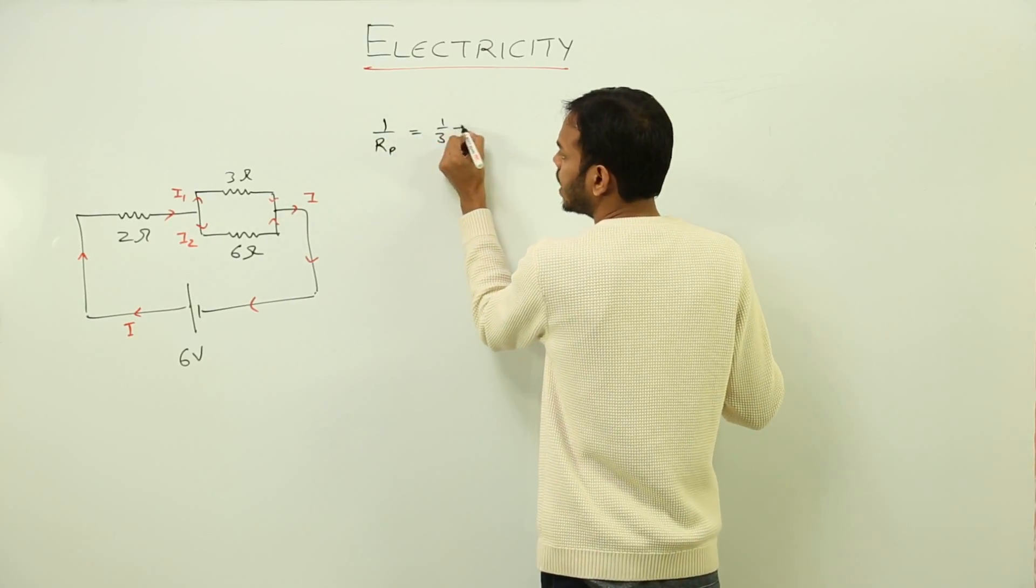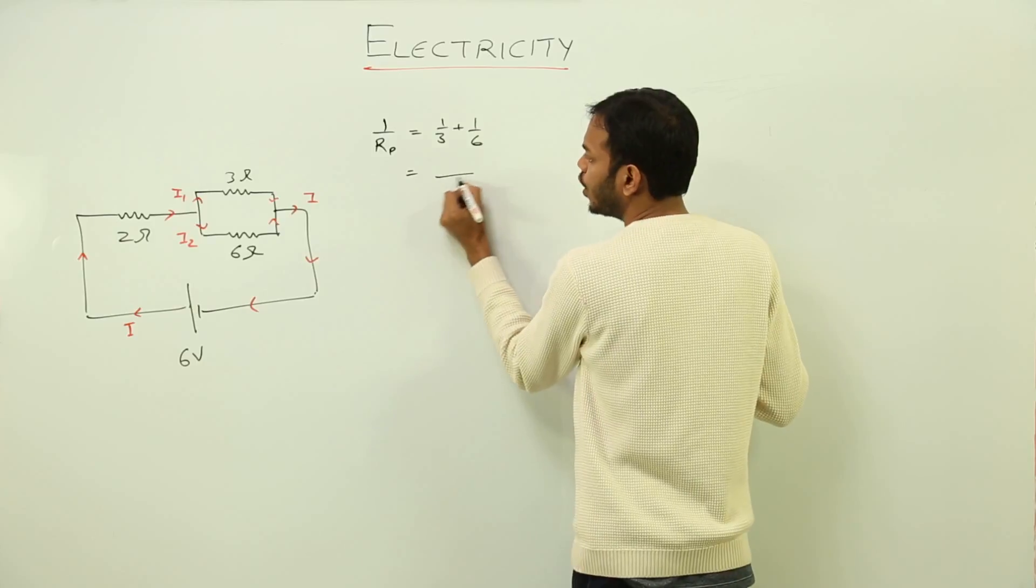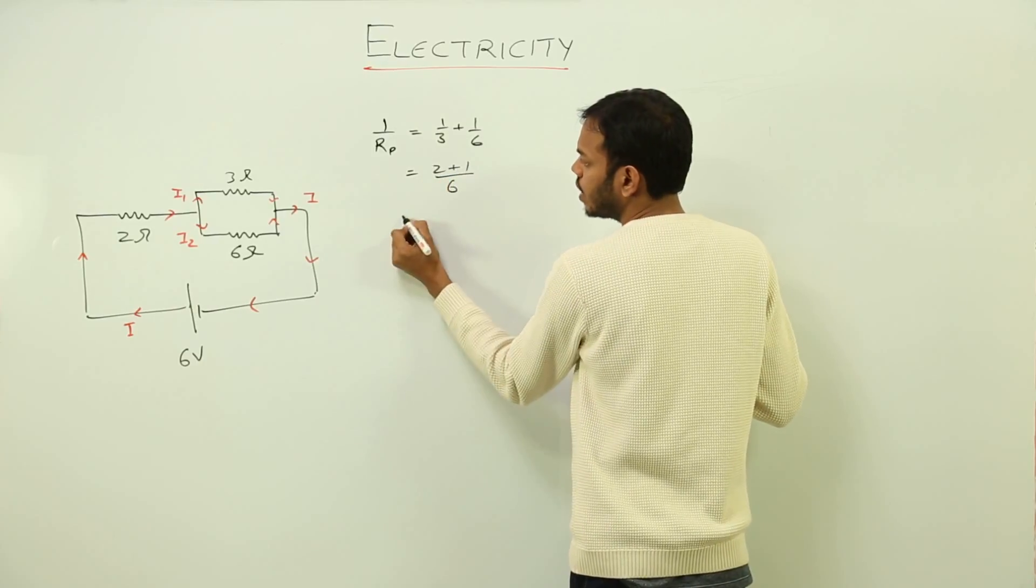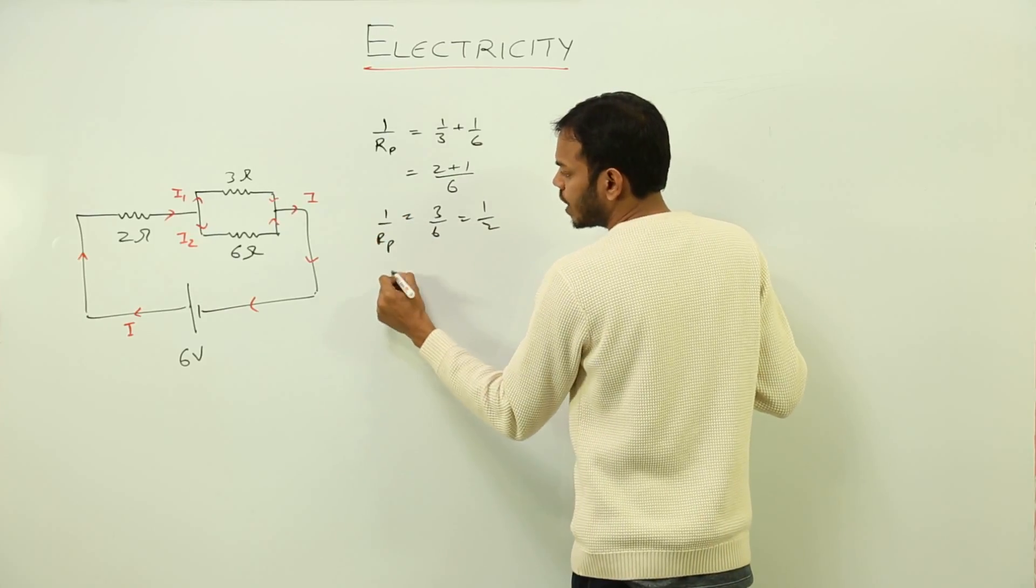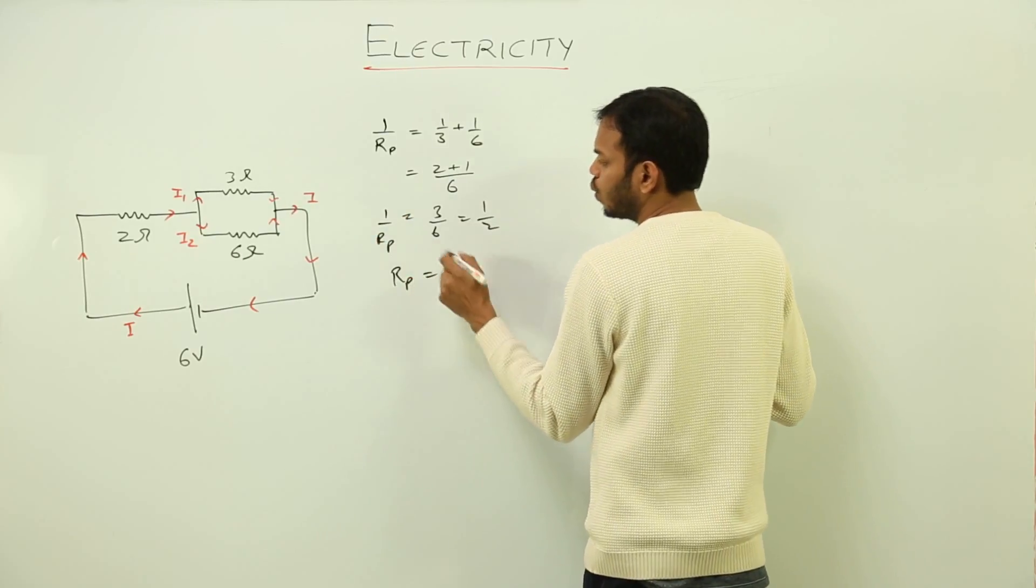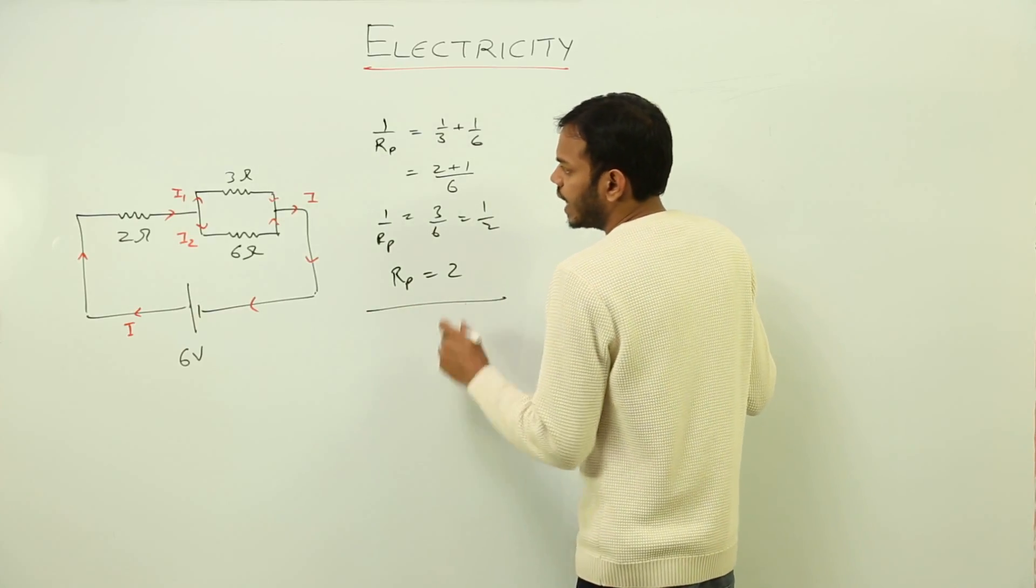It's going to give me 2 plus 1, which is 3 upon 6, which is 1 by 2. So 1 upon Rp, so resistance in parallel is equal to 2. Reciprocated, this is 2.